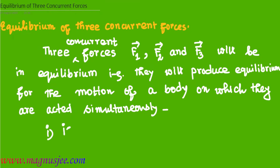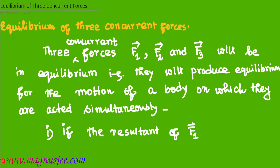Condition number one: if the resultant of two forces — vector F1 and vector F2 — is equal and opposite to the third force, vector F3, then the three concurrent forces are in equilibrium.